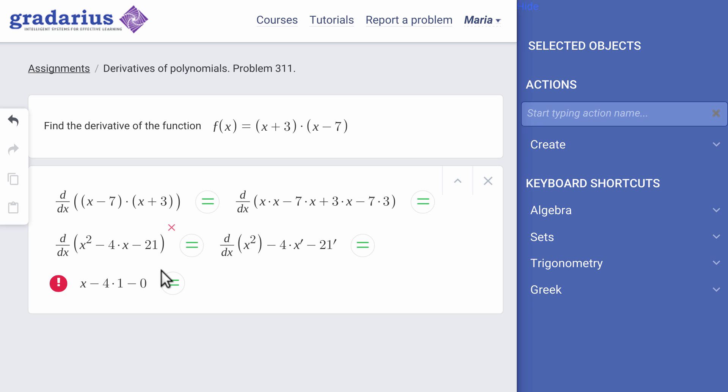The red circle appears, showing Maria she made a mistake. She clicks on the circle, and Gradarius informs her that something is not quite right.